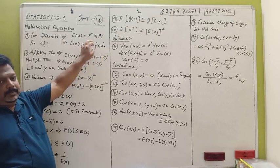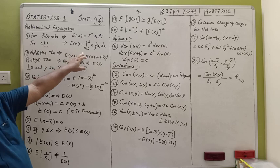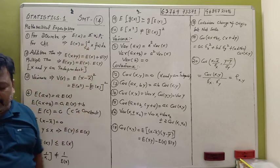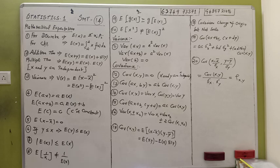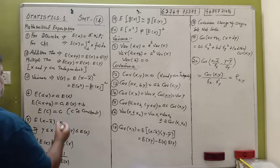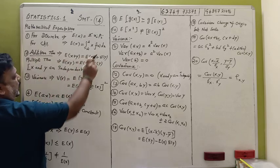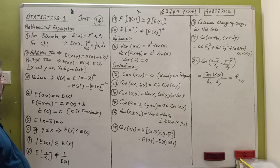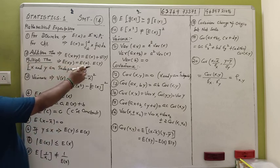For the PDF, the probability density function gives E(X) = integral of x · f(x) dx. The addition theorem states: E(X + Y) = E(X) + E(Y). Also, E(X · Y) = E(X) · E(Y), specifically when X and Y are independent.